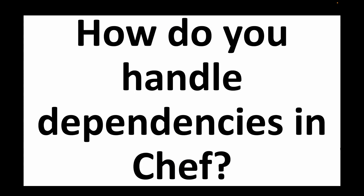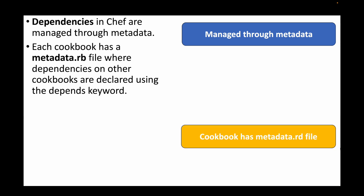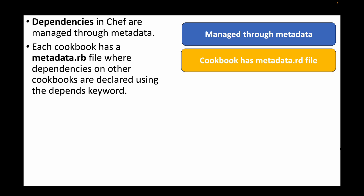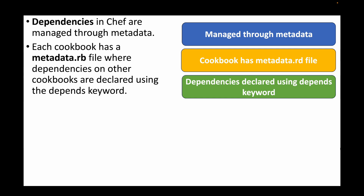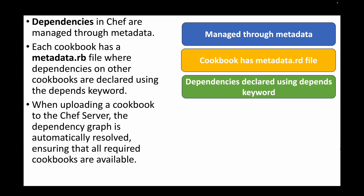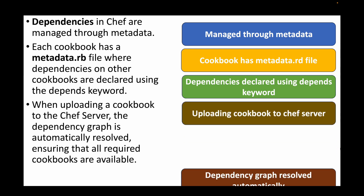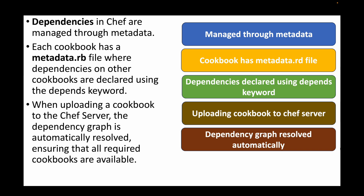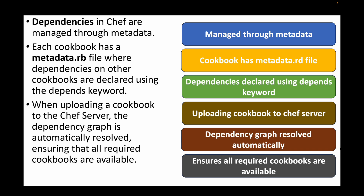The next question is: how do you handle dependencies in Chef? Dependencies can be managed through metadata. Each cookbook has a file called metadata.rb where we define dependencies for other cookbooks using the 'depends' keyword. When uploading a cookbook to the Chef Server, the dependency graph is automatically resolved, ensuring all required cookbooks are available. Chef automatically takes care of that when executing the cookbook.